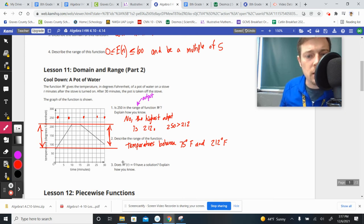And then does W of T equals 0 have a solution? Explain how you know. Well, this right here is saying the function of the water temperature at some time, we don't know, is it ever equal to 0? Well, 0 would be down here, and that's not within our range. So, no. 0 degrees is not within the range of our function.